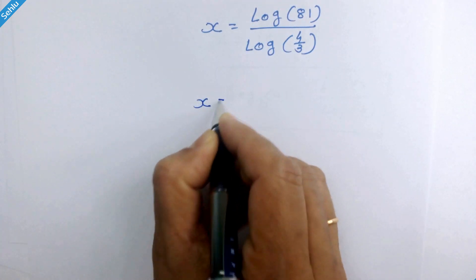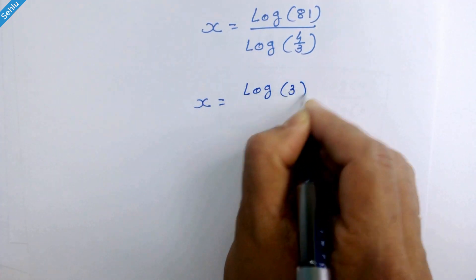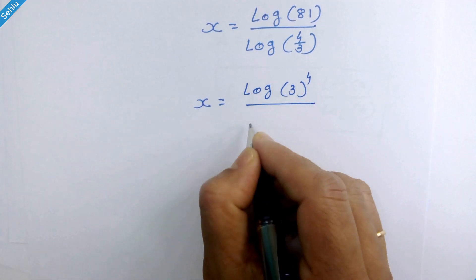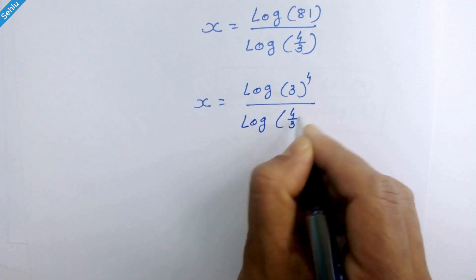So x is equal to, 81 can be written as 3 raise to 4 over log of 4 over 3.